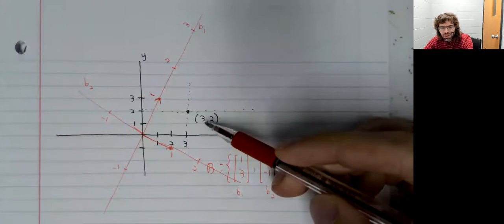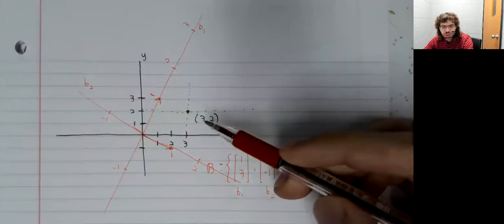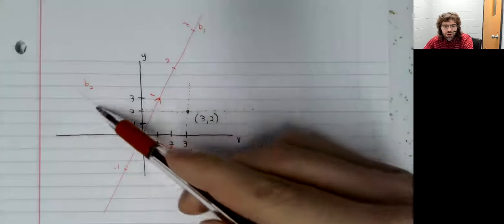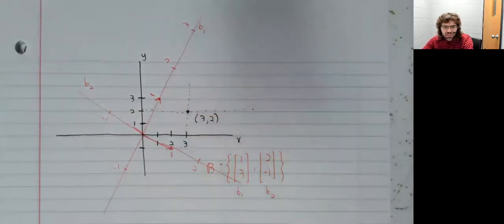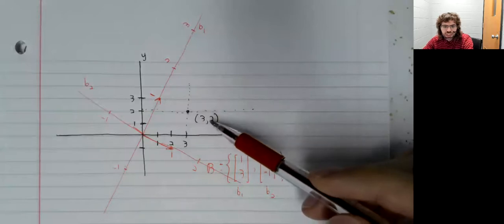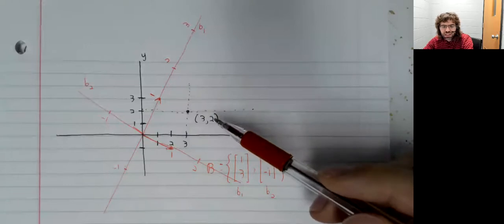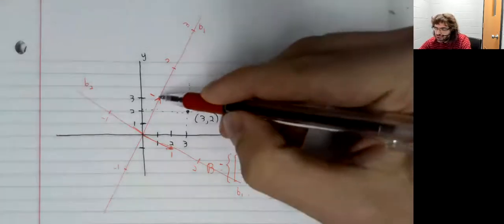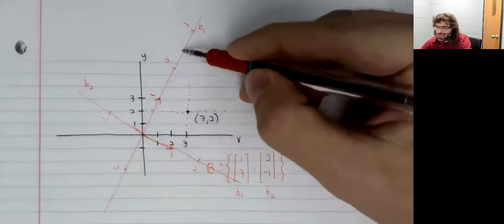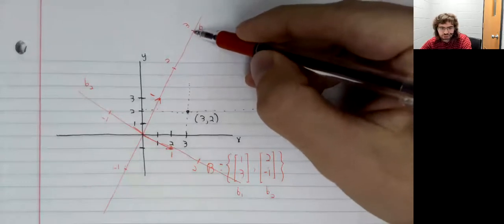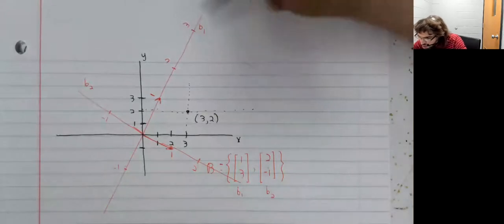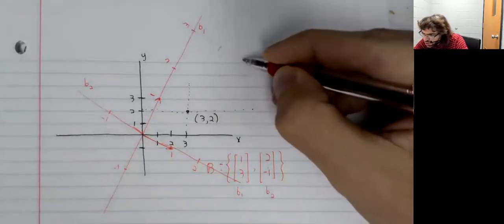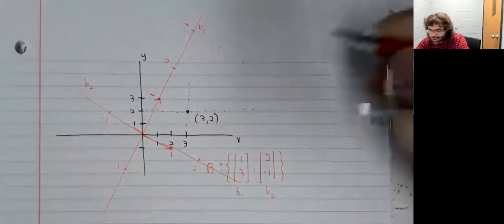Let's talk about three comma two. If we're now using these axes, suddenly three comma two is somewhere completely different. One, two, three units, then one, two units.